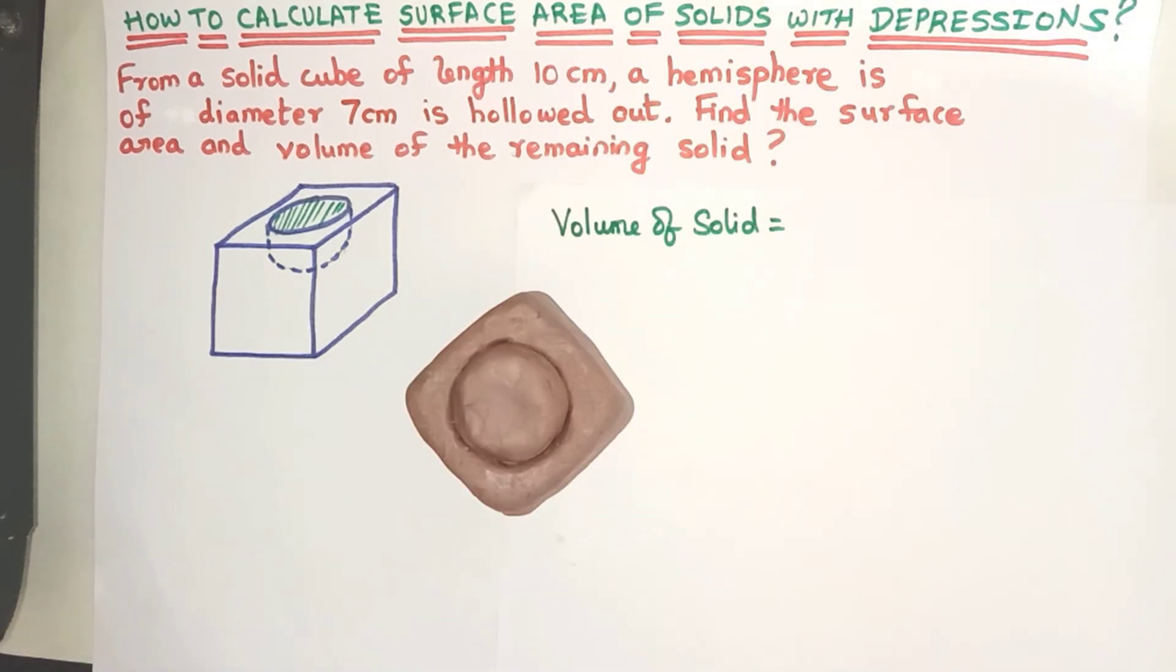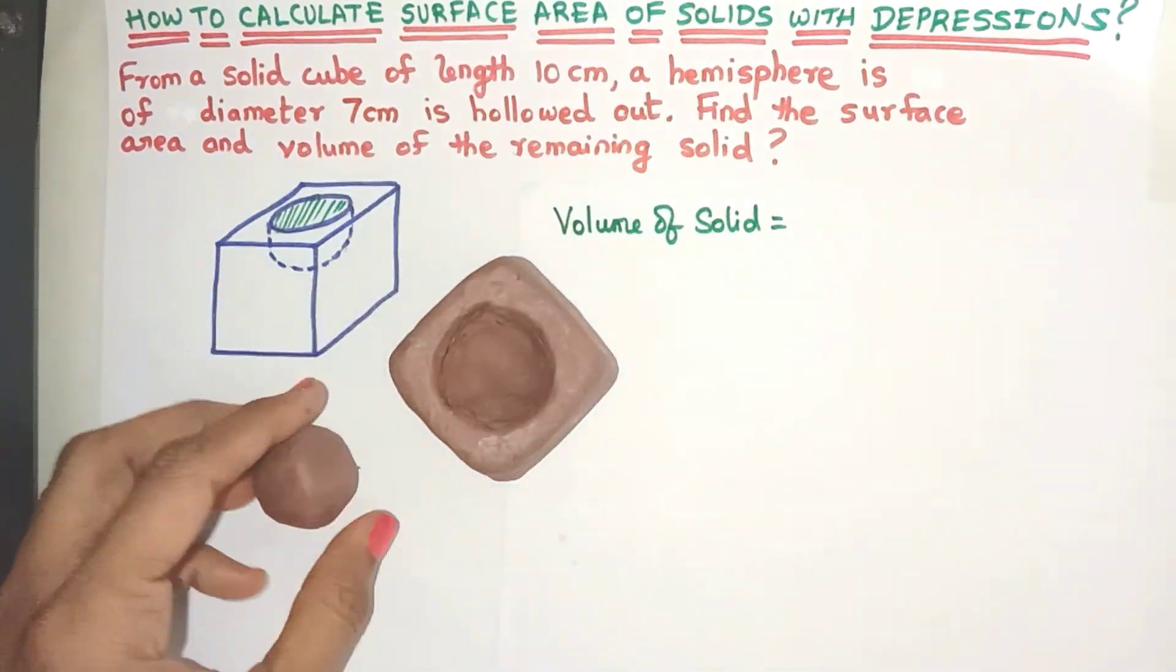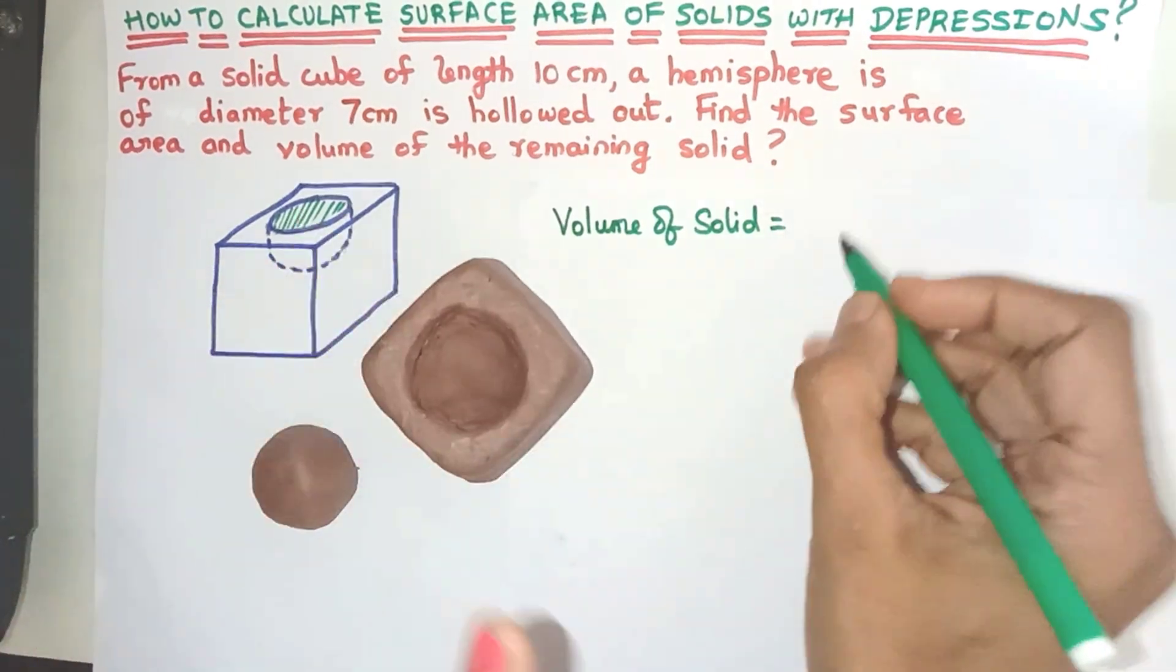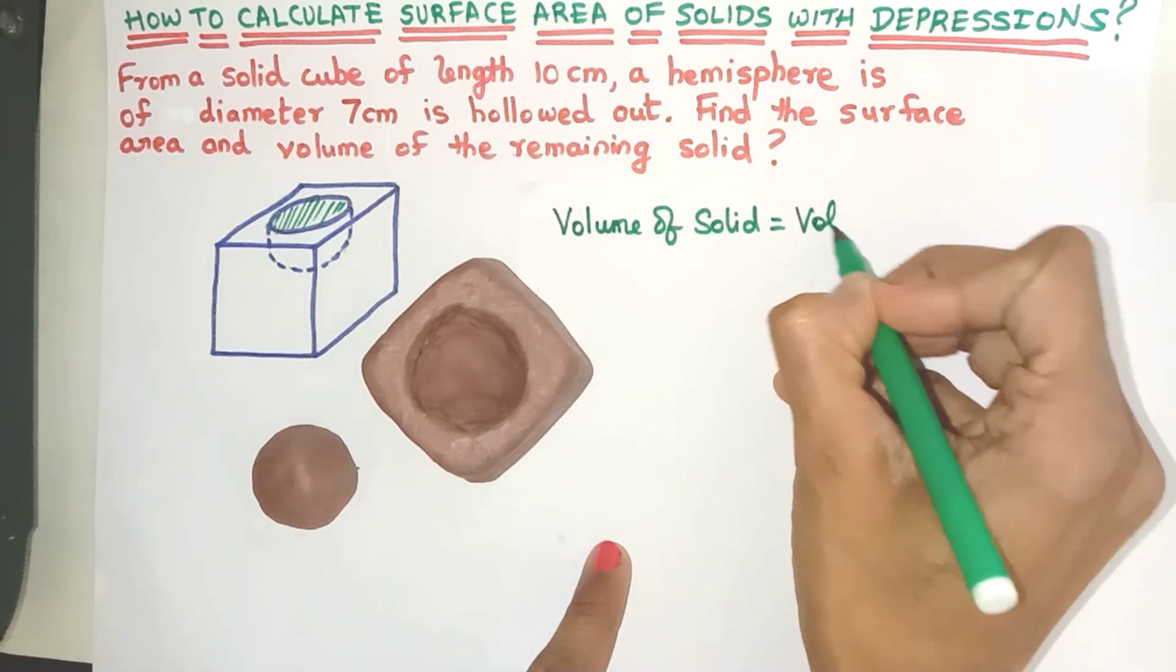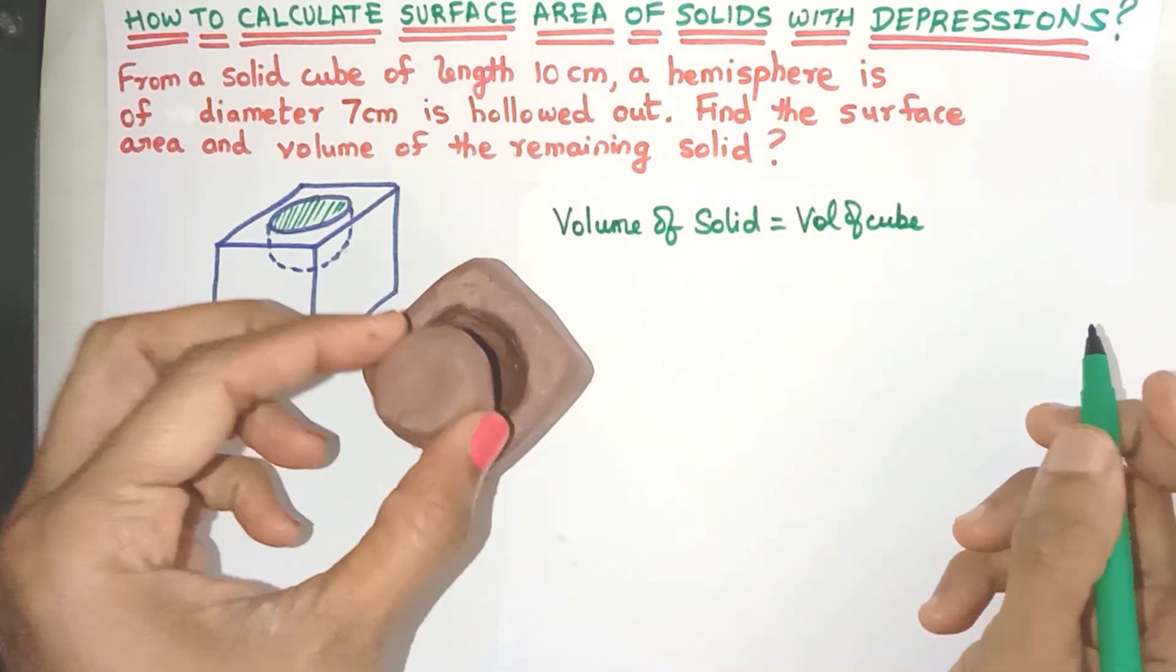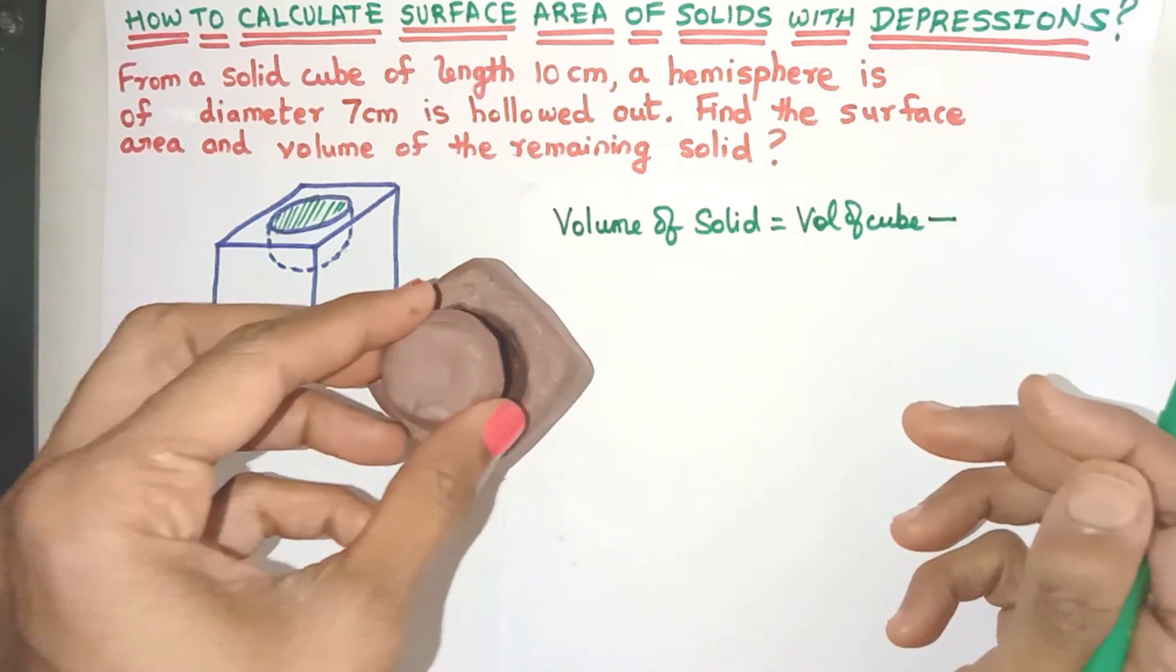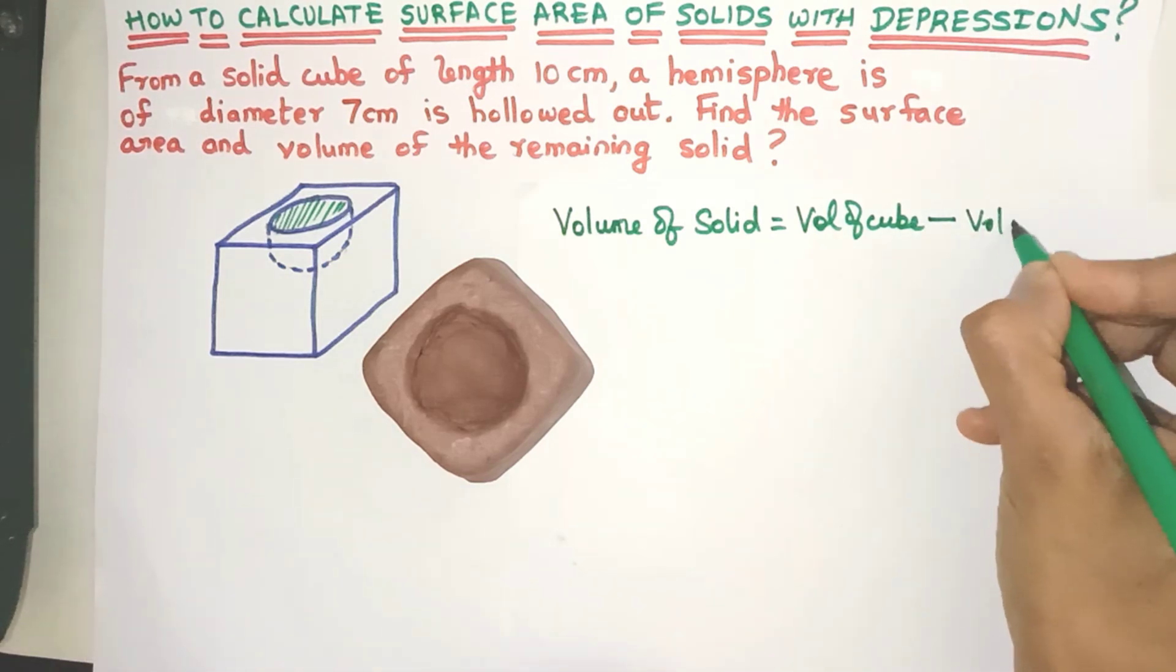Now let's find out the volume of the solid. So initially it is a cube from which we remove the hemisphere. So first we will find out the volume of the cube and then because we are removing a hemisphere we are going to do subtraction. So we are going to subtract the volume of the hemisphere.